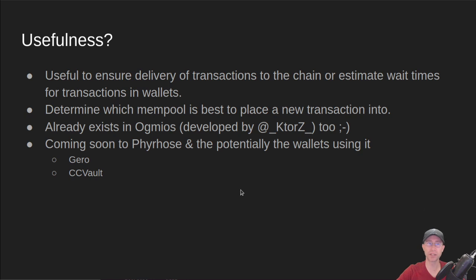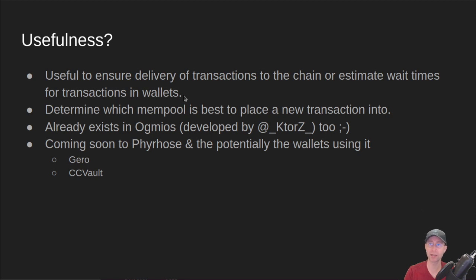So where is this useful? It's very useful to ensure delivery of transactions to the chain — if you want to make sure your transaction stayed in the mempool. It's also important for estimating wait times for transactions in a light wallet. If a light wallet is talking to a bunch of nodes on the back end, it can determine which mempool has the most space so a transaction can get on the chain sooner. It can determine the best place to submit a new transaction, and estimate wait times based on how full the mempools are.